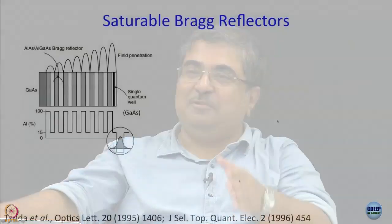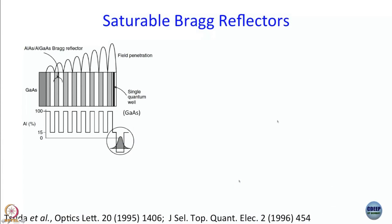Whenever we say Bragg, we think diffraction — alternate layers and gratings. A Bragg reflector is something like this: you have a mirror, and in the example discussed here, the reflective surface is gallium arsenide. Then you have alternate layers of high and low refractive index. When light falls on it, light goes in, gets reflected, and comes back.